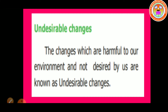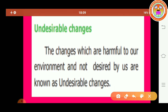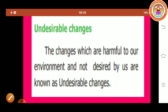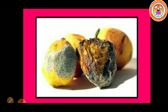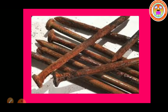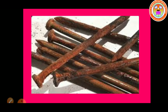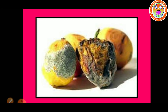Next one is undesirable changes. The changes which are harmful to our environment and not desired by us are known as undesirable changes. For example, decaying of fruit, rusting of iron, deforestation. These are the examples of undesirable changes, because these changes are harmful to our environment. So, these changes are called undesirable changes.